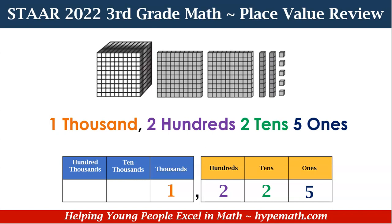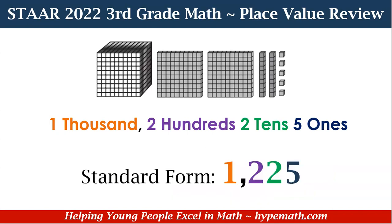Looking at our place value chart, we have a one in the thousands place, a two in the hundreds place, a two in the tens place, and a five in the ones place. Now when we think about standard form, it just means how the number is written out in numbers — the way you normally would write the number. In our example, we have 1,225. This is in standard form.